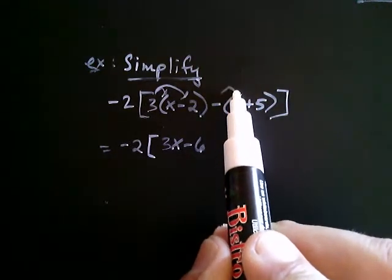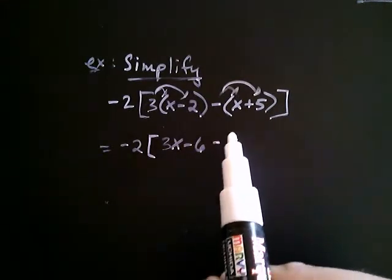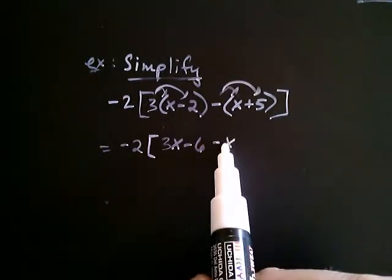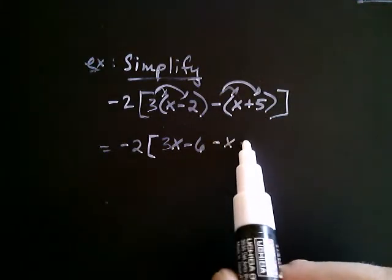So, that negative 1 gets distributed. So, we get negative 1 times x, which is just written as negative x. And then negative 1 times 5, positive 5, is negative 5.